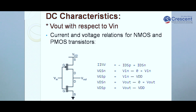The DC characteristic describes the relation of VOUT with respect to VIN. The key equations are: I_inverse equals minus I_DSP equals I_DSN, where I_DSP is the drain-to-source current of the PMOS transistor and I_DSN is the drain-to-source current of the NMOS transistor. I_DSN is equated to minus I_DSP because the currents in PMOS and NMOS are equal in magnitude but opposite in sign.